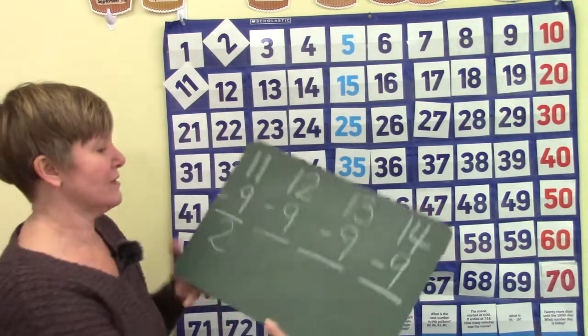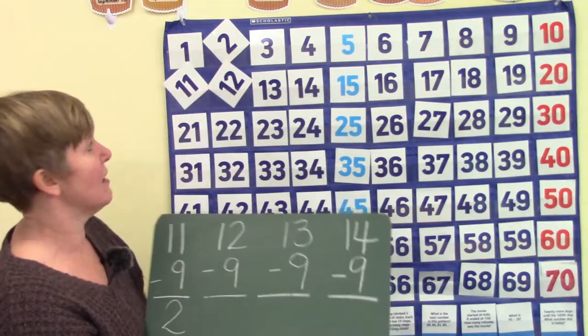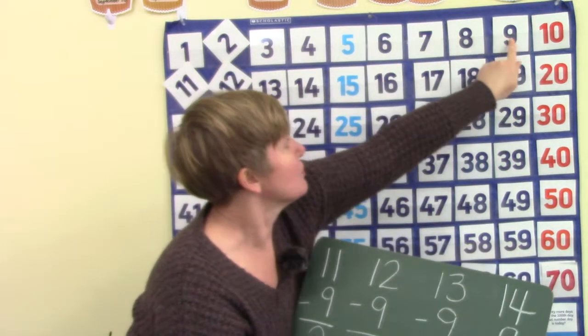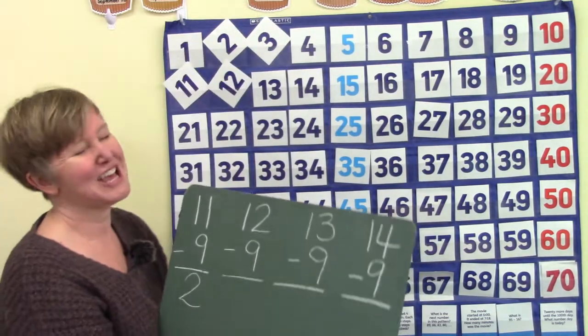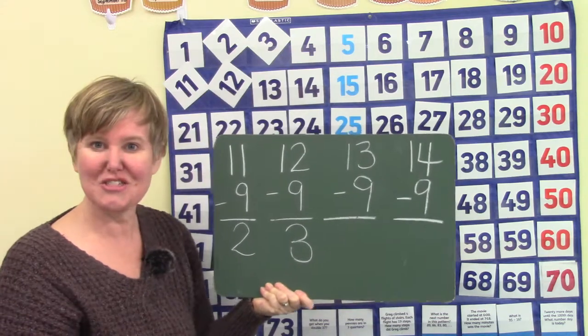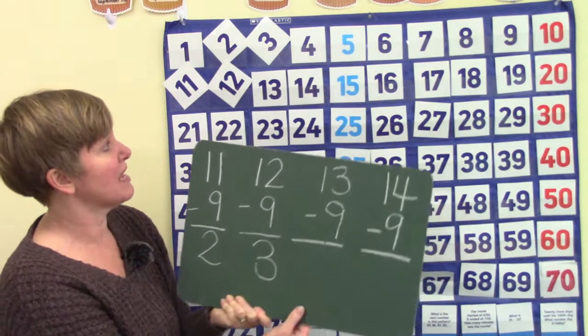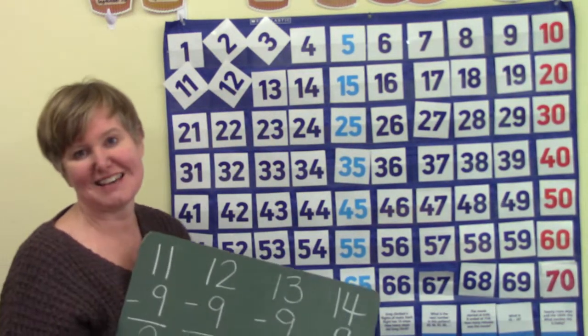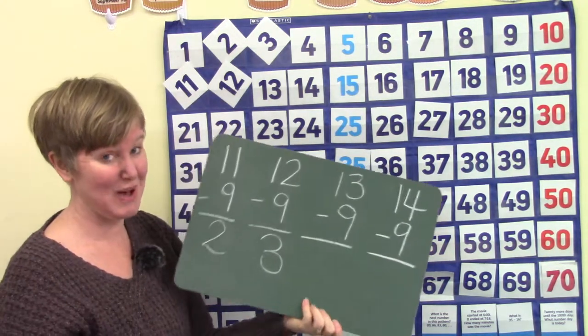All right now we are going to try twelve minus nine. Twelve and we're going to count back nine. One two three four five six seven eight nine. Twelve minus nine is three. We could also do it another way. We could start at nine and count to twelve. One two three because there is a difference of three between twelve and nine.